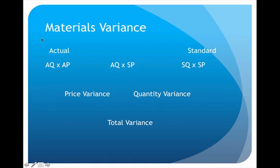The first thing we're going to learn how to calculate is called a materials variance. The calculations are pretty easy — the real challenge is learning how to properly set up the materials variance structure. The far left hand side is always for the actual amount, which is the actual quantity used times the actual price paid. The far right hand side is for the standard amount: the standard quantity that should have been used times the standard price that should have been paid.